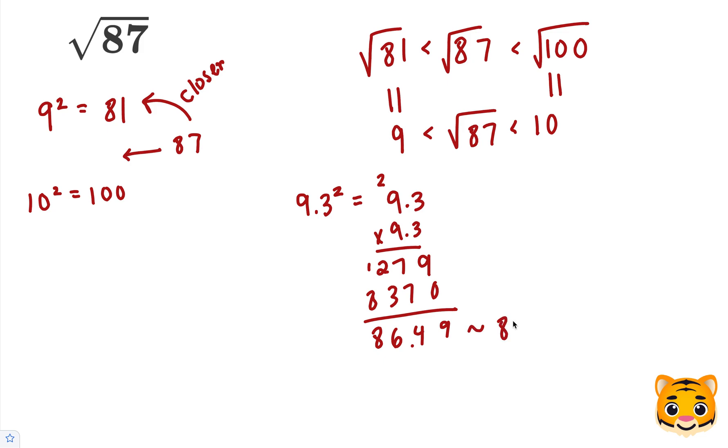So we can round it to 87 and say that 9.3 squared is approximately 87. We could have chosen to do 9.4 squared. However, we would have found that 9.4 squared is further from 87 than 86.49 is, so we chose to stick with 9.3 squared.